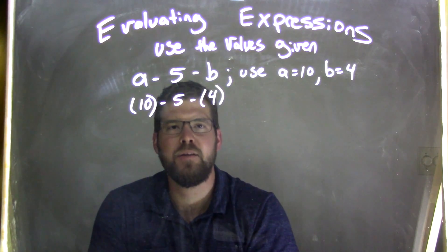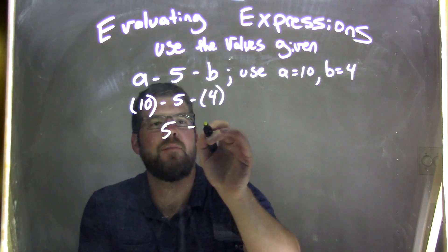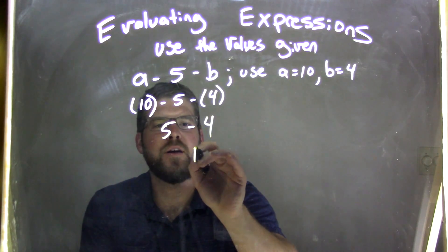Well, 10 minus 5, right? All subtraction here, left to right. 10 minus 5 comes first, 10 minus 5 is 5, minus 4, and 5 minus 4 is just 1.